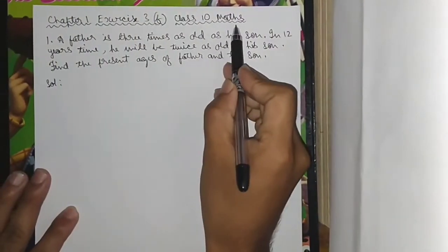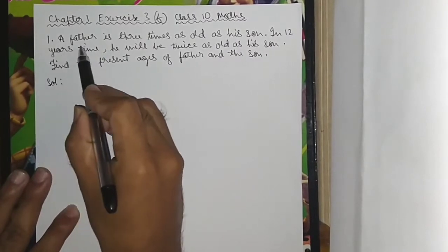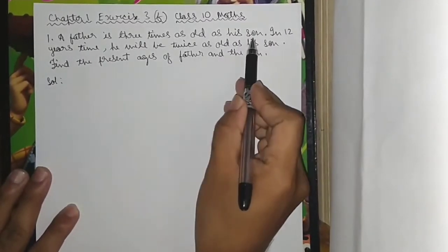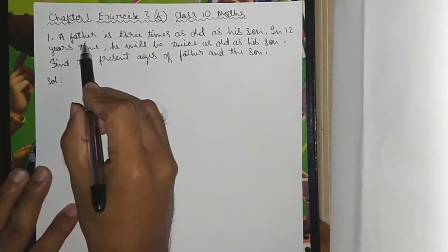Chapter 1 Exercise 3.6, Class 10 Maths. Question 1: A father is three times as old as his son.